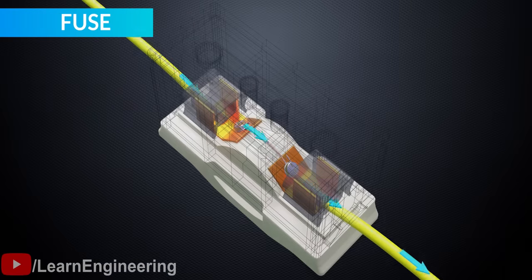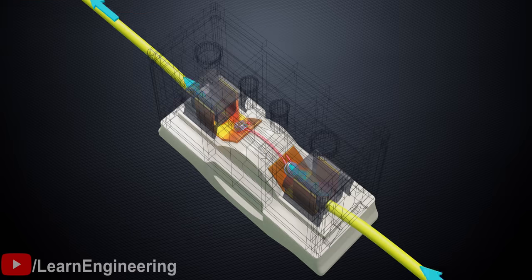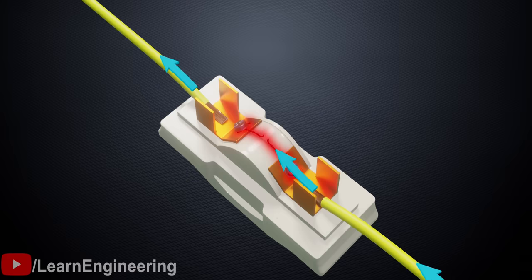A simple device called a fuse, which has a low melting point wire, was used for home protection in earlier days. In both the fault conditions mentioned previously, the current spikes up, resulting in overheating and fusing the wire or breaking the circuit.